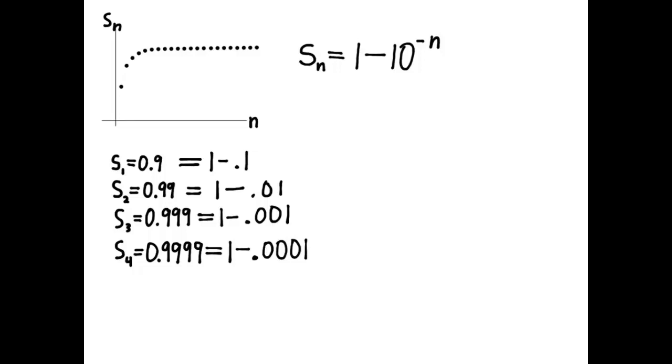Now, we can see from the graph that our sequence appears to have a limiting value, L. So, we could say the limit as N approaches infinity of S sub N is equal to L, some number L. Our job now is to prove that L equals 1. What does it mean to prove that L equals 1? It means to prove that S sub N becomes arbitrarily close to 1. What does it mean to be arbitrarily close to 1?